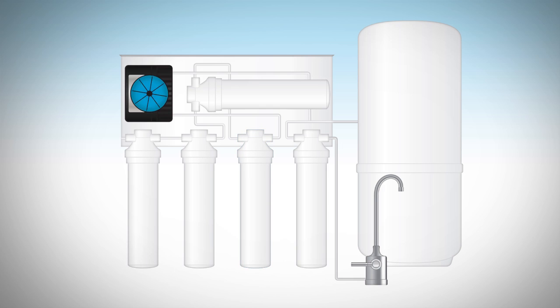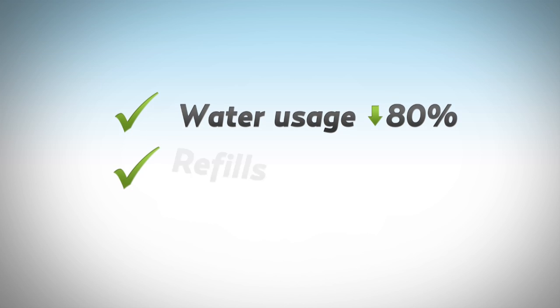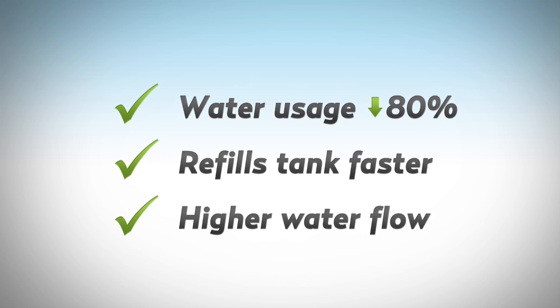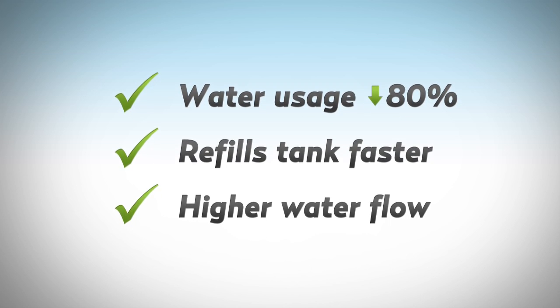A non-electric, water-driven permeate pump helps boost pressure and directs the water into a compact, high-capacity storage tank. This pump reduces water usage by 80%, refills the storage tank faster, and provides a higher water flow at the faucet, so clean, great-tasting water will be ready when you need it.